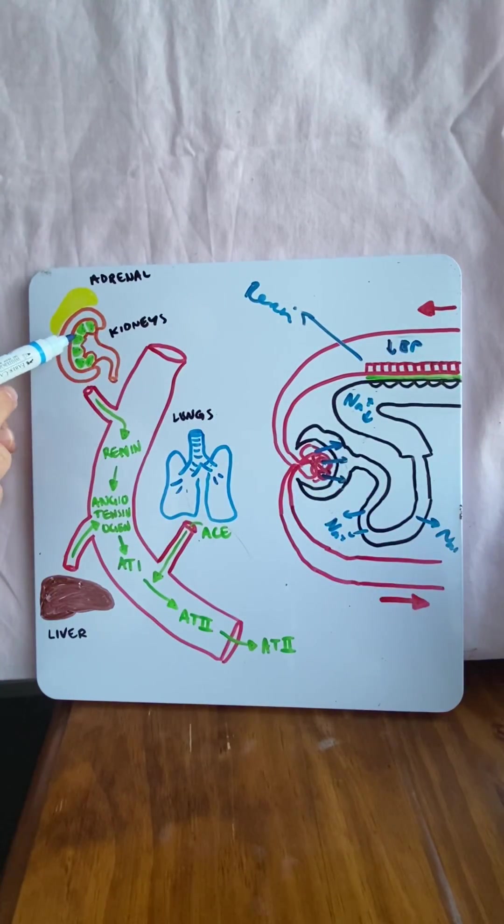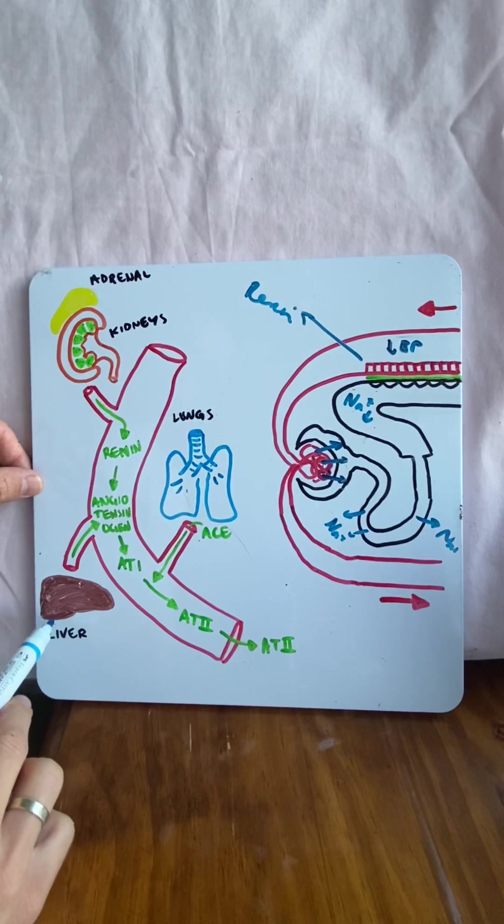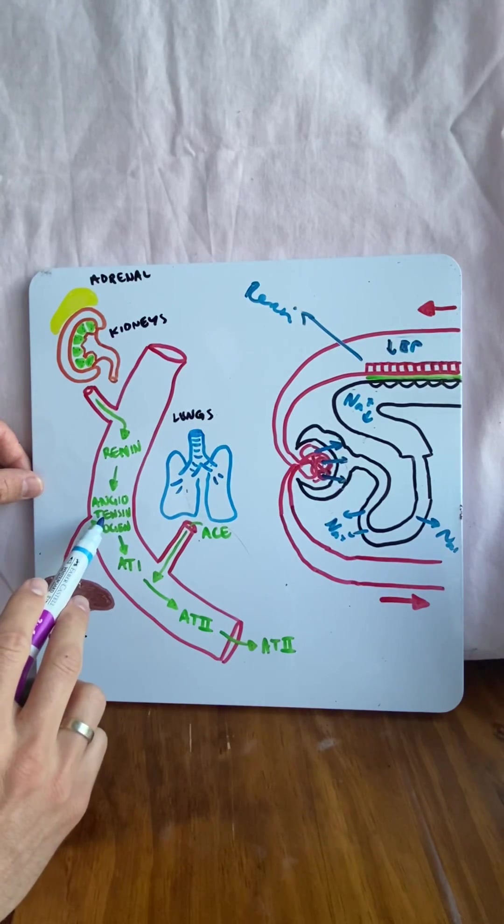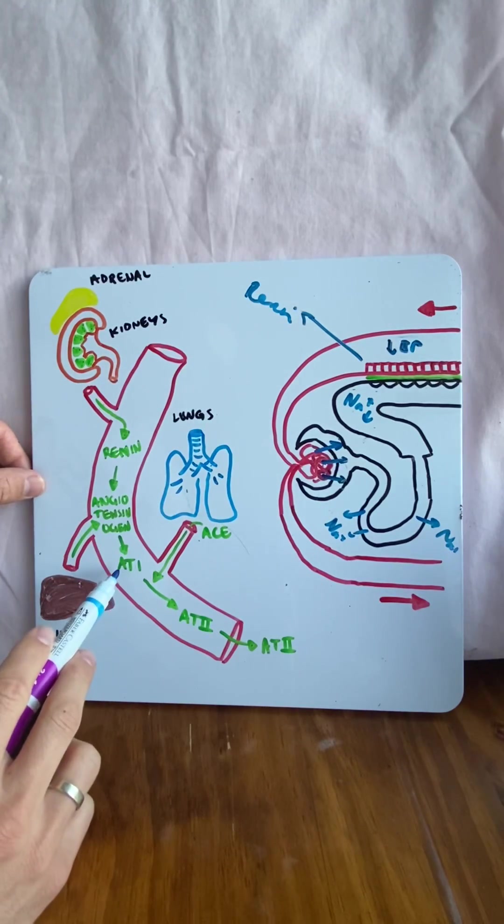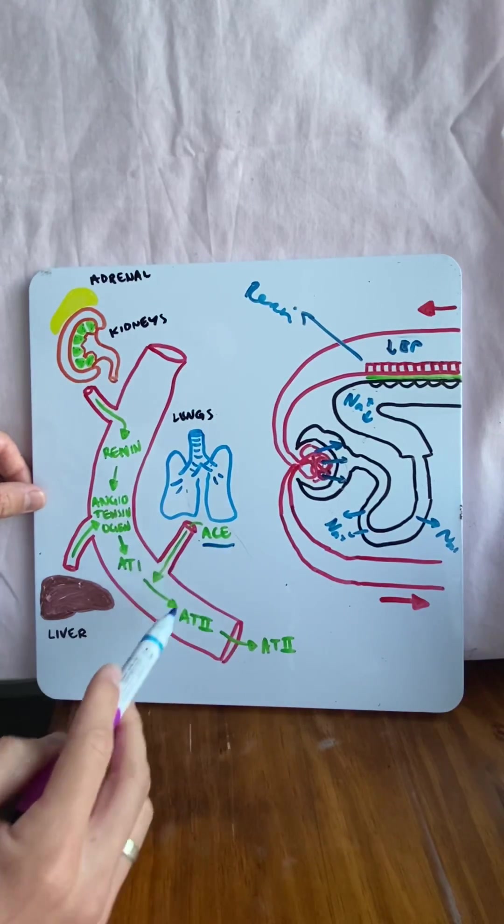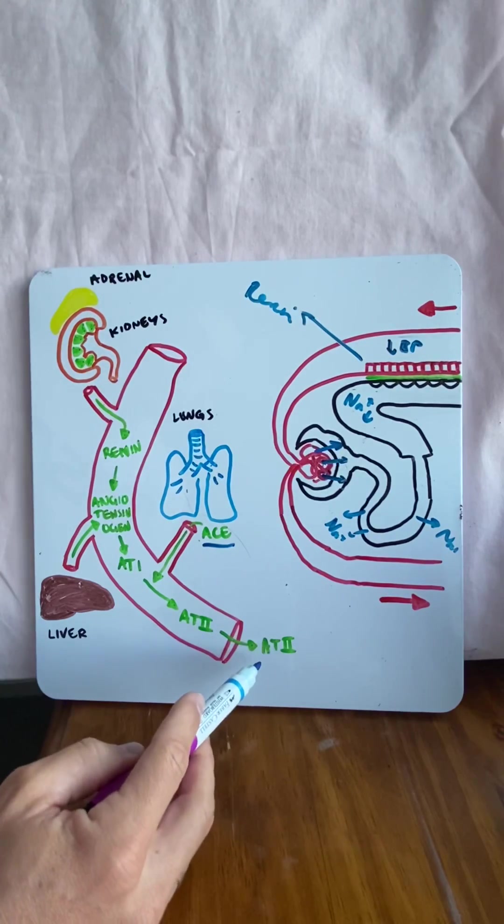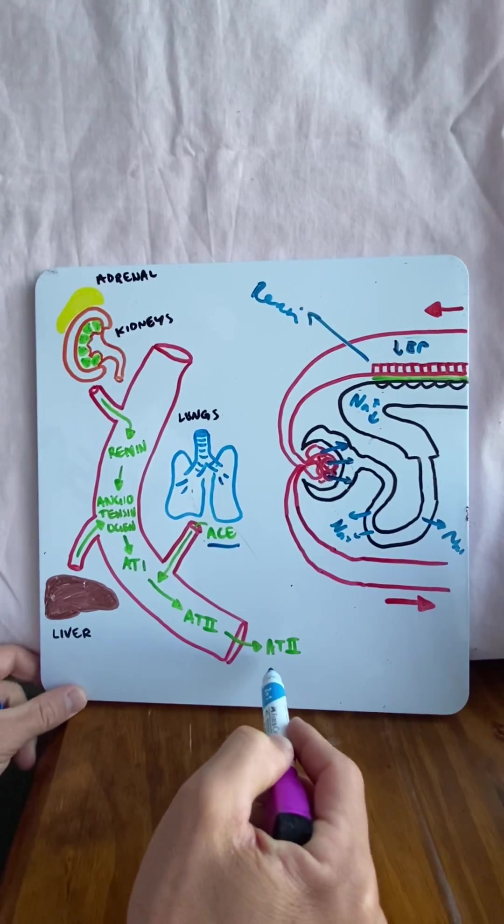Now once renin is released from the kidneys, it's floating through the systemic circulation and renin is going to activate something called angiotensinogen that's released from the liver. Angiotensinogen is now angiotensin-1. When it reaches the lungs, which produces something called ACE, angiotensin-converting enzyme, it converts angiotensin-1 to angiotensin-2, and it's angiotensin-2 that does all the things to increase blood pressure and blood volume.